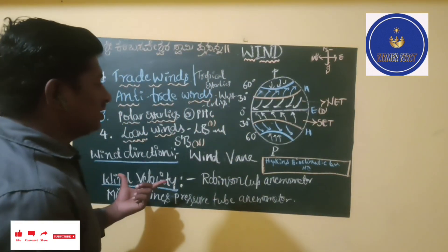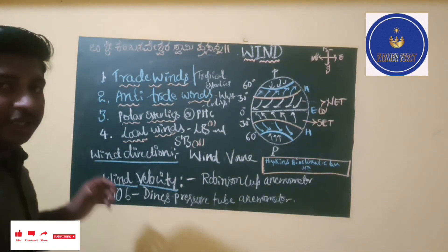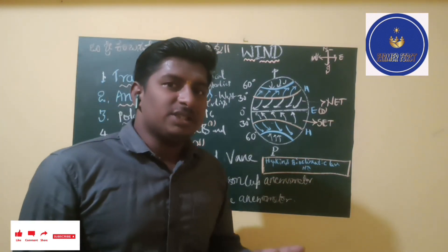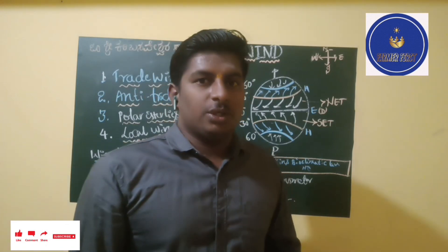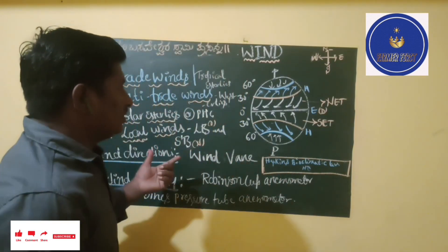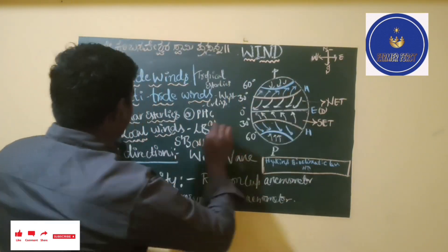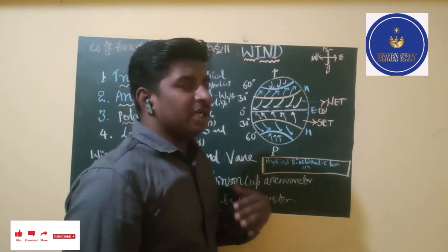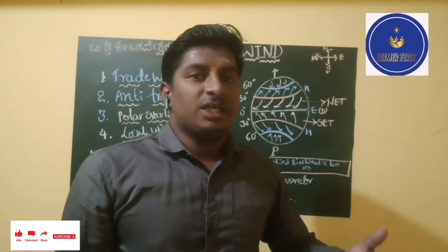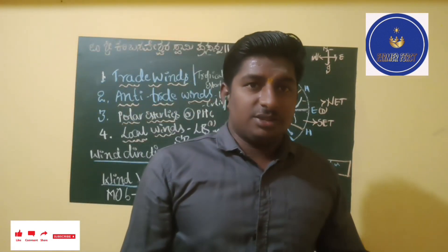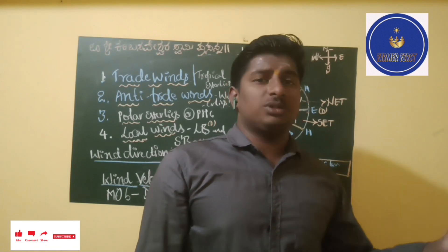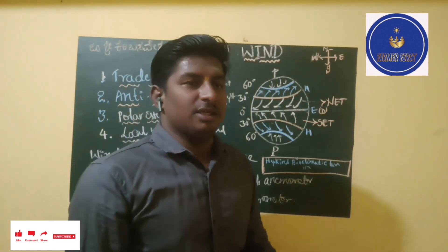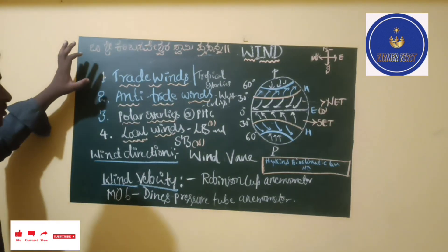There are mainly two kinds of winds: one is trade winds and another is anti-trade winds. With respect to the poles, they are called polar easterlies. Some local winds are also there — land breezes and sea breezes. We will see how the winds flow from one direction to another.